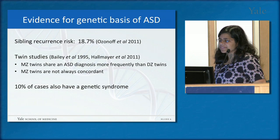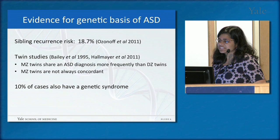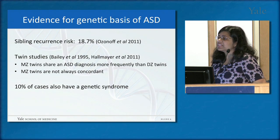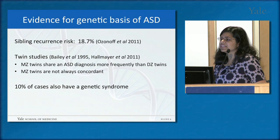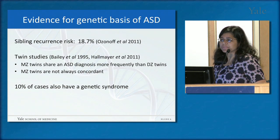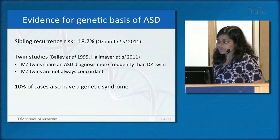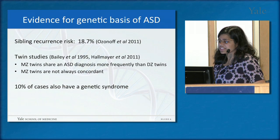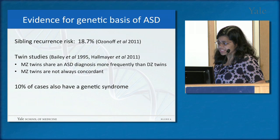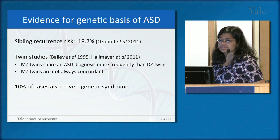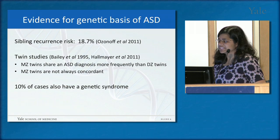Turning now to autism specifically: what's the evidence for a genetic basis? One line of evidence comes from family studies looking at sibling recurrence risk — how often do siblings in families that already have a child with autism also receive an autism spectrum disorder diagnosis? A 2011 study showed the risk is almost 20%, much higher than in the general population. However, one could argue siblings share the same environment, so maybe it's a shared environmental risk.